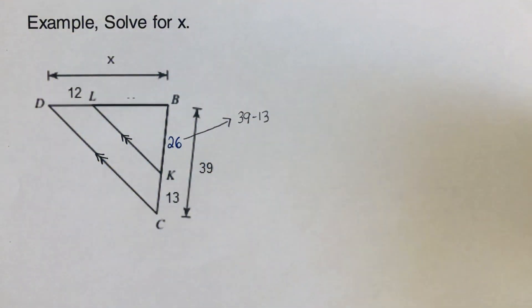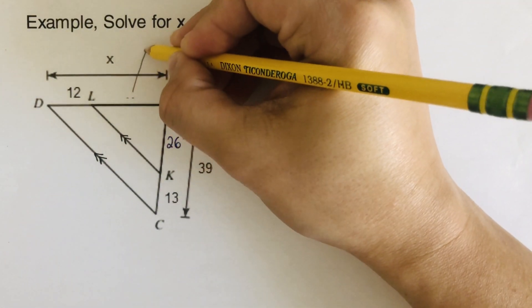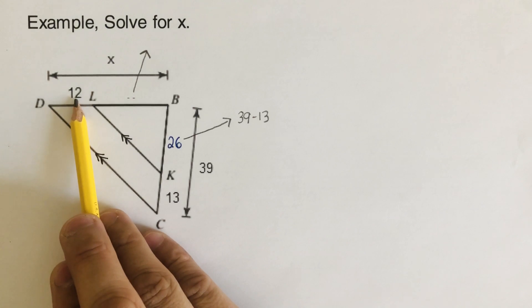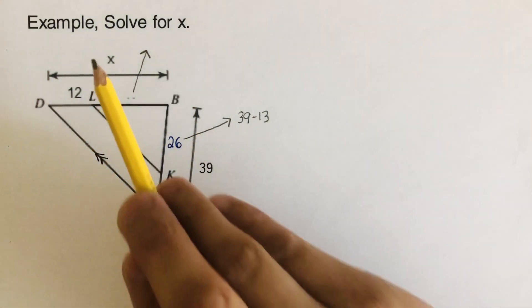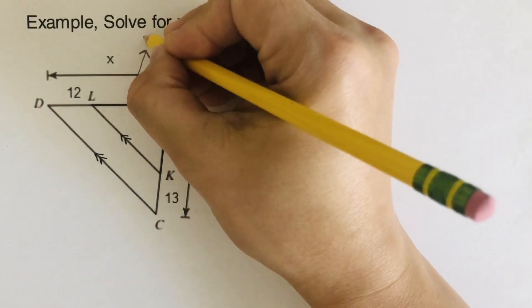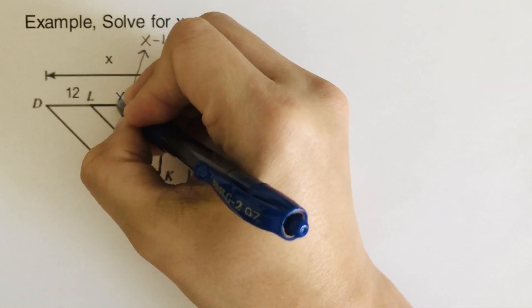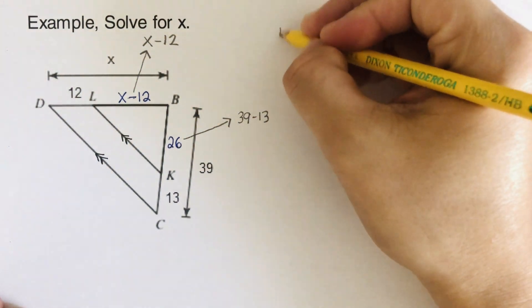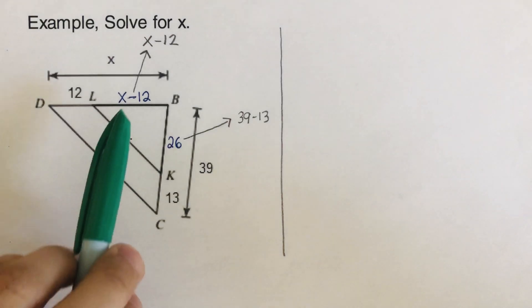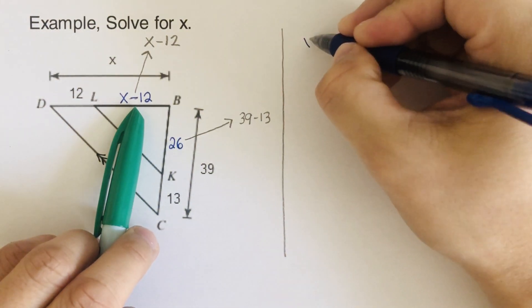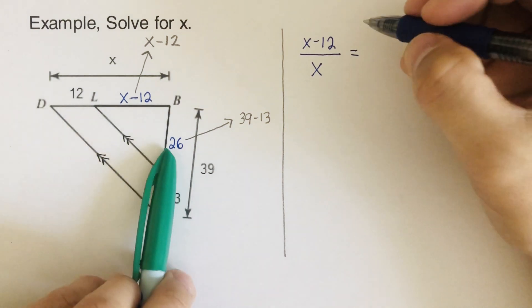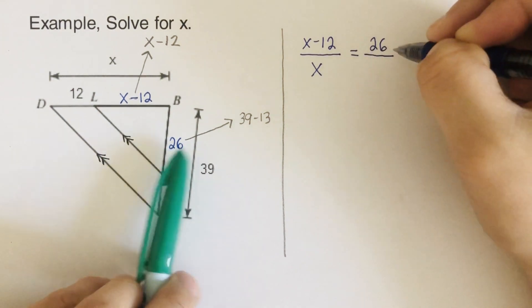Now looking at this other side, we do the same thing. We know this is X and this is 12 — just like how we did 39 minus 13, we do the same here, but it's not a number, it's an X. So X minus 12 is our expression for this side. From here we set up the equation: X minus 12 over the whole thing X is equal to 26 over the whole thing 39.